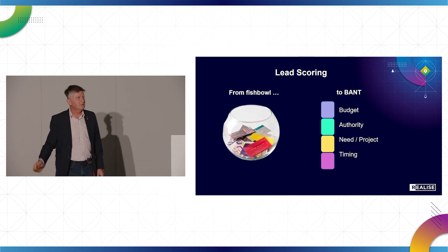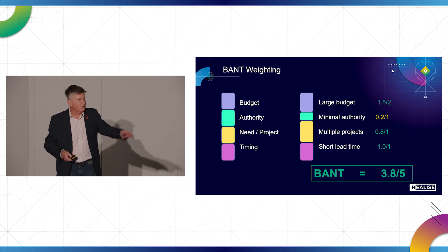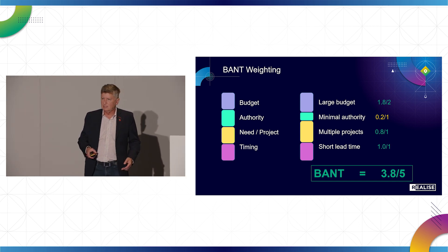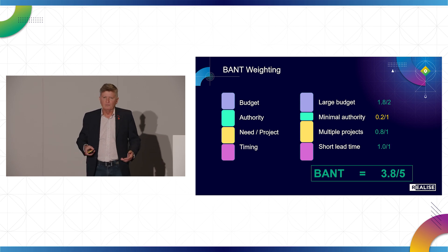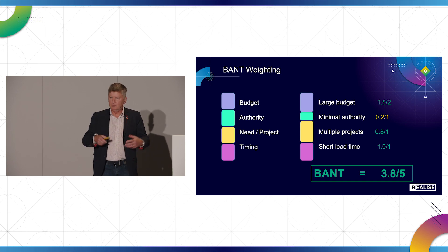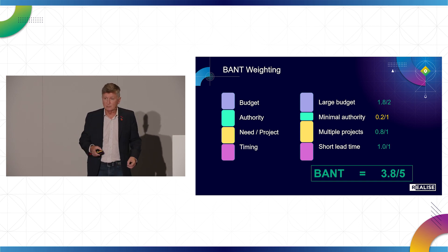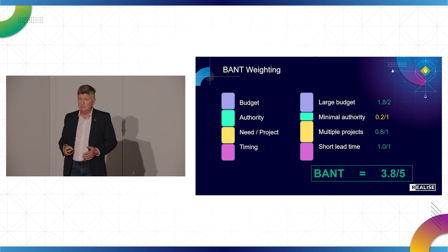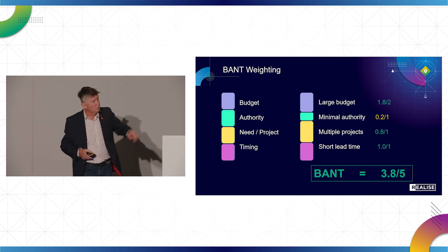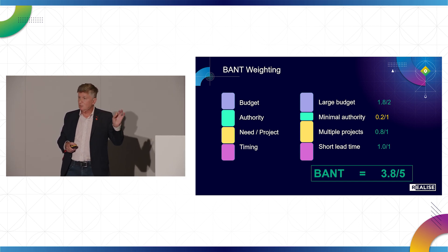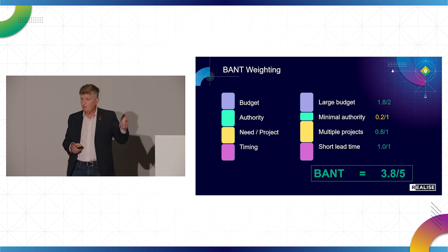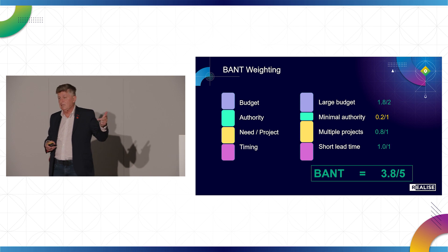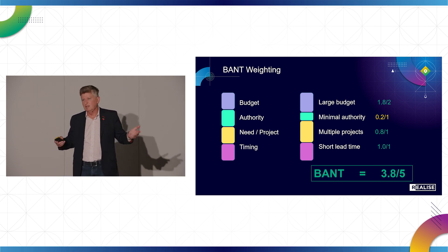Imagine upstairs in the Innovation Pavilion they end up with 4,000 leads. How do they decide which ones to work on first? By giving an aggregate score, they have some chance of prioritizing. You can look at the BANT weighting and say: this person has a decent budget, they're allowed to spend it, they have a project, and it's in the next three months — I should probably get on the phone to them. Versus the person who has a budget but no current project and is thinking about something for 2025 — they can probably wait.